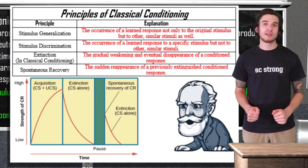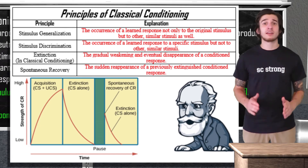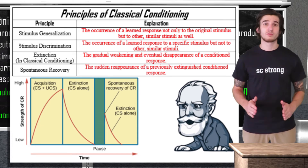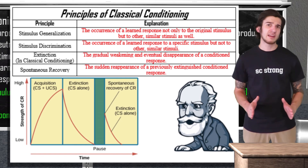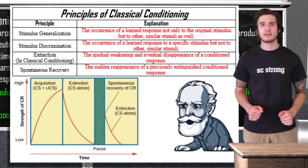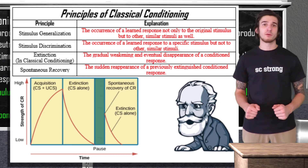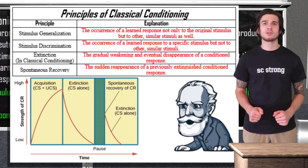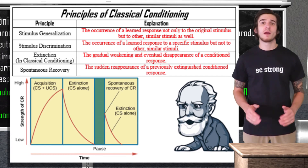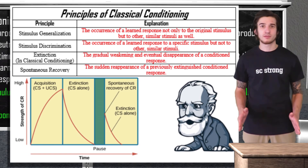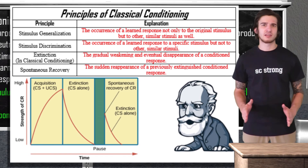Extinction is the gradual weakening and eventual disappearance of a conditioned response. In classical conditioning, this occurs when the conditioned stimulus is repeatedly presented without the unconditioned stimulus. However, after a brief rest period, something known as spontaneous recovery can occur — the sudden reappearance of a previously extinguished conditioned response, without exposure to the unconditioned stimulus. This visual shows extinction and spontaneous recovery graphed out using Pavlov's data: we see gradual extinction of the conditioned response, but after a rest period there's a brief spike in saliva production occurring without the unconditioned stimulus of food.